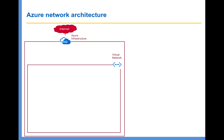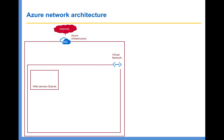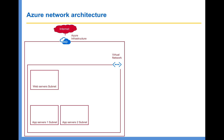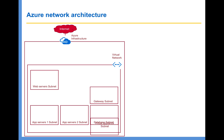Within this Virtual Network, you can subdivide the IP address range into multiple segments, i.e., subnets. For example, you can create a subnet to host all the web servers, you can create subnets to hold your app servers, and also a subnet to hold databases, gateways, and if you have a firewall, you can create a separate subnet to install the firewall. Basically, you can divide your Virtual Network into a number of subnets to host different Azure resources.